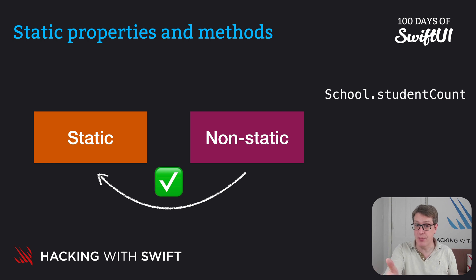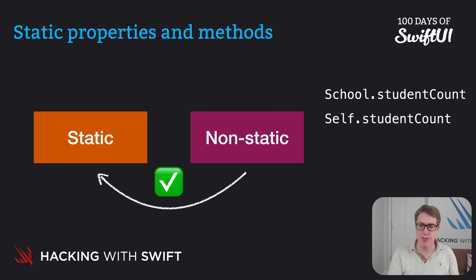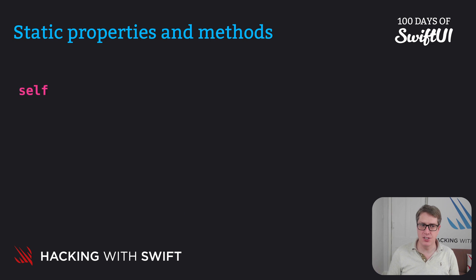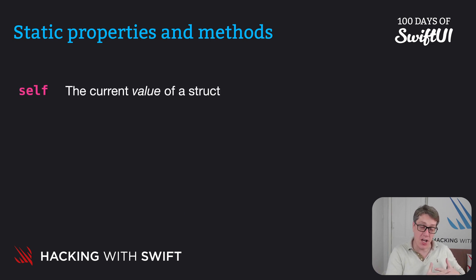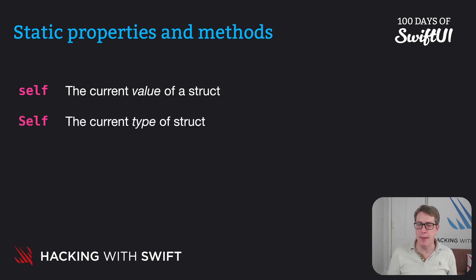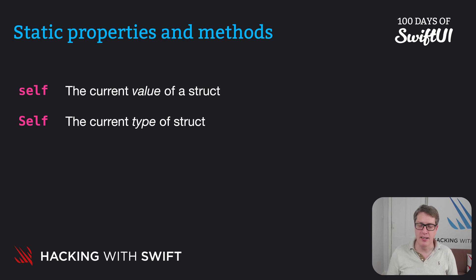If you're inside the struct in a non-static method, a regular method, you could also say Self.studentCount with a capital S. And that's different from self with a lowercase s. When you say self with a capital S, things change. Remember, self with a lowercase s means the current value of a struct. With a capital S, we mean the current type of struct we're on right now. It is really easy to forget the difference, but it kind of matches the way Swift works.